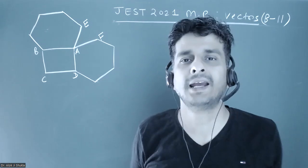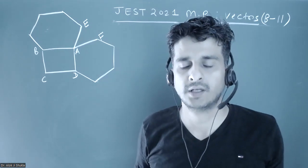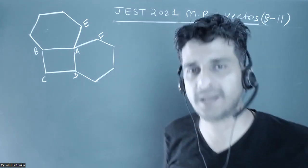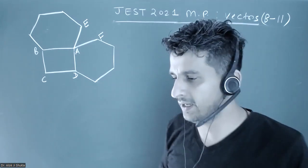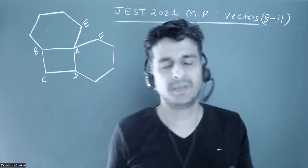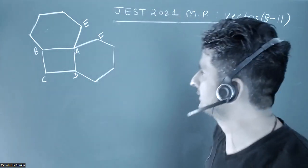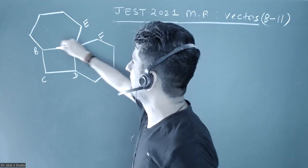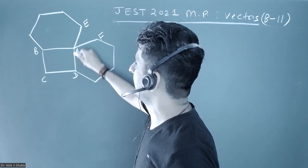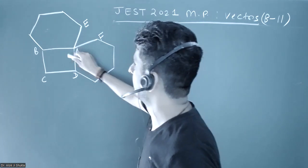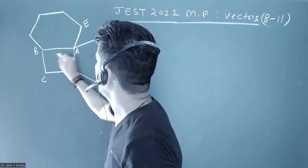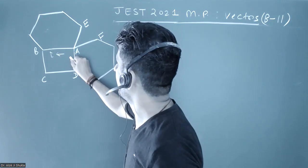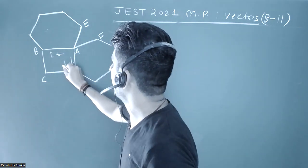We will follow what they've said in the question and use the basic concept of vectors. If I take this vector as i cap and this as j cap on the plane of the board.